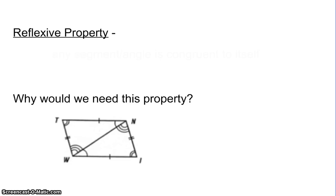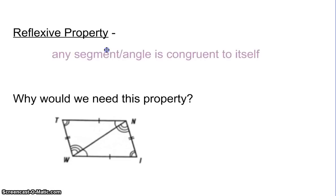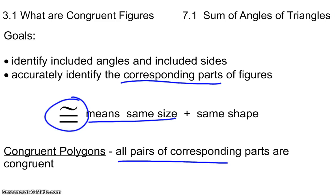We've briefly talked about the reflexive property already, and that's going to come into play more in this chapter. We've talked about how any segment or angle is congruent to itself. Going back to the other side, we're talking about all pairs of corresponding parts being congruent.